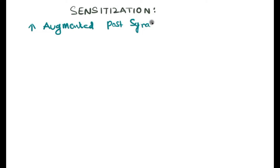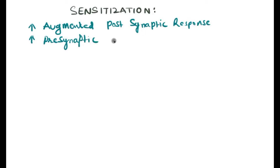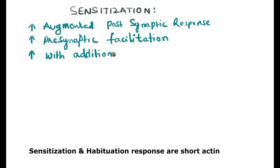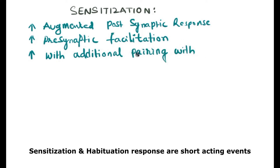So there is no association required for habituation. Coming to sensitization, the second aspect: sensitization is the increased, augmented postsynaptic response seen in the neuronal system during learning, and presynaptic facilitation is the main factor which promotes more activation in the postsynaptic neuron — just the reverse of habituation.